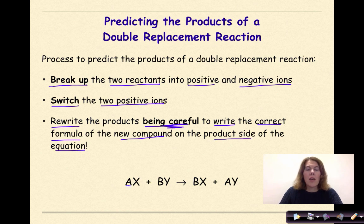We need to rewrite the products being very careful to write the correct formula of the new compound on the product side of the equation. So the A is now going to go with the Y to form AY and the B which is representing a positive ion will go with the X which is a negative ion.